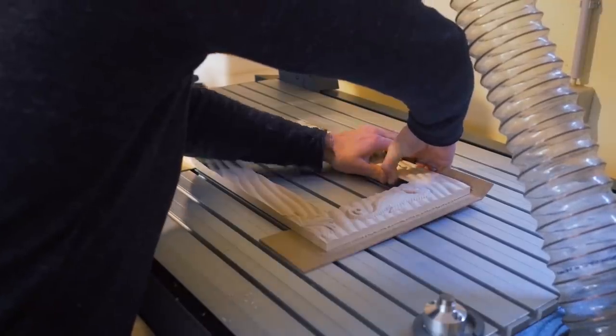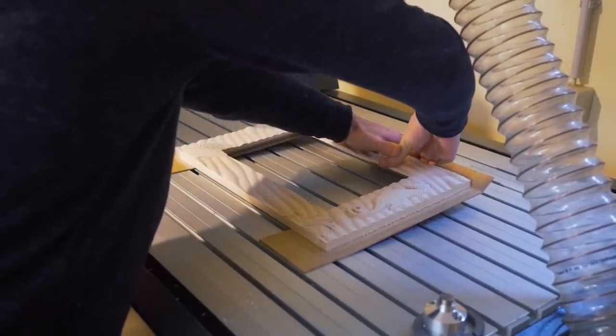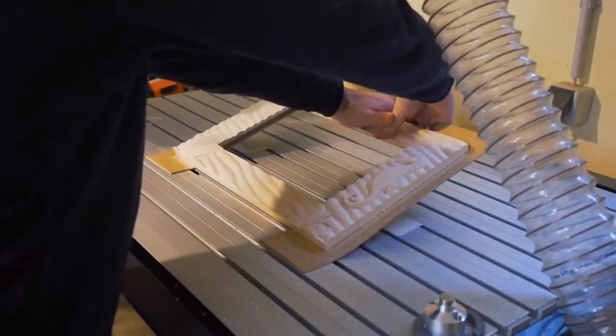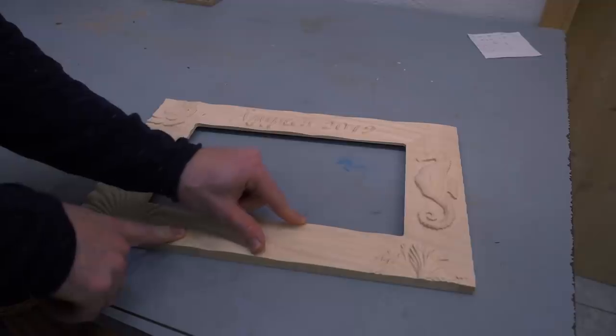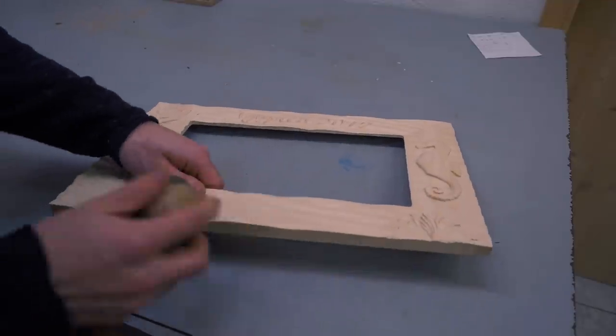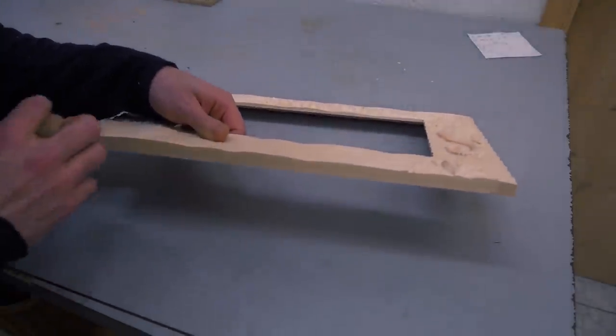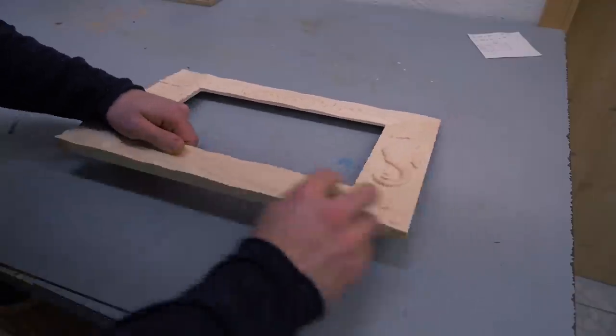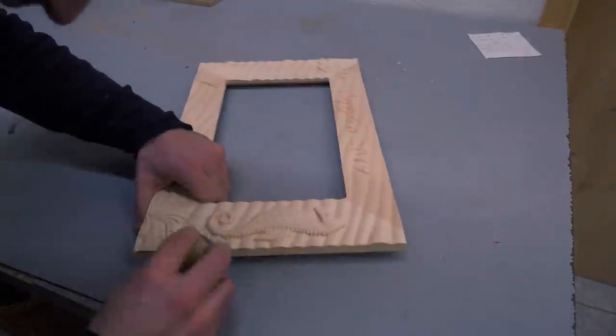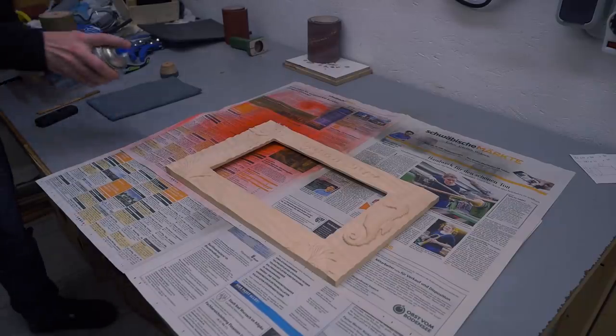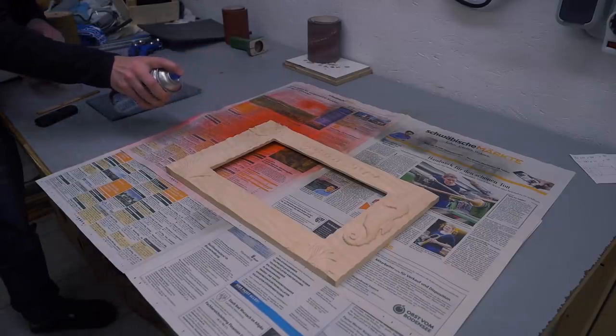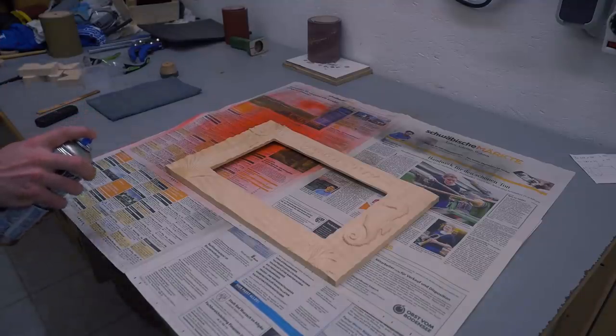Then comes the challenge of not breaking the work because the tape sticks so well. Directly from the CNC router the edges and corners are still very sharp and I'm now just breaking them a little bit. Because of all that detail spray lacquer is the best and easiest choice for a finish. I applied two coats.